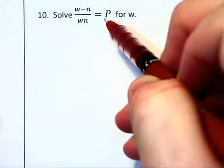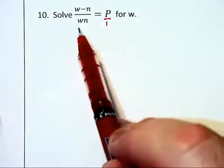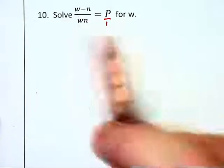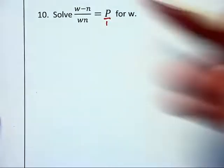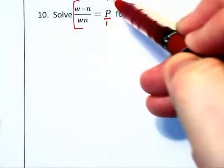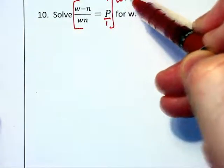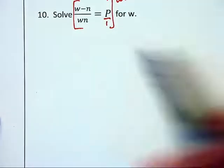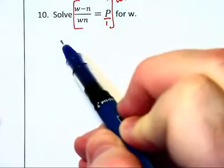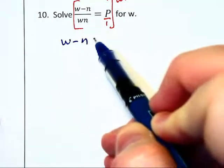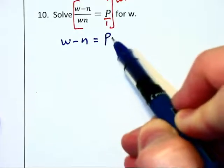This next problem is a little bit different because we have two different w's on the left hand side that we're trying to solve for. We are going to multiply through by the least common denominator of wn to clear the fractions. And on the left, the denominator just disappears and we have w minus n and on the right you have capital P wn.